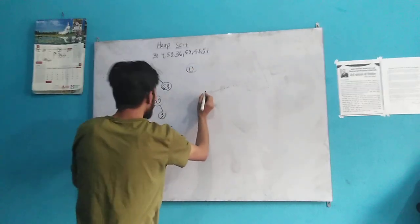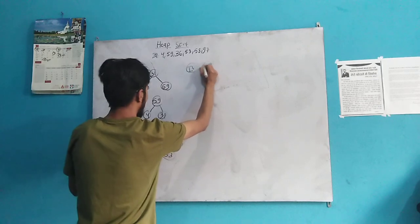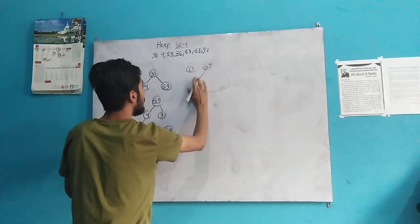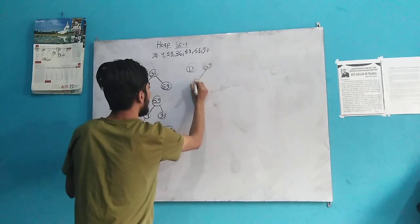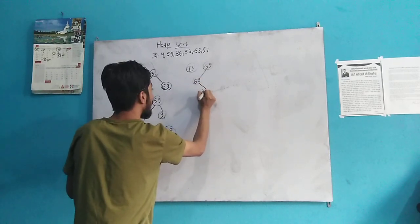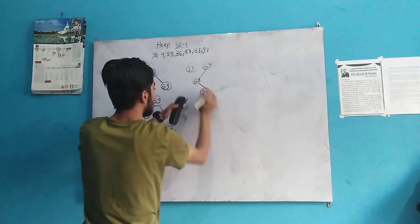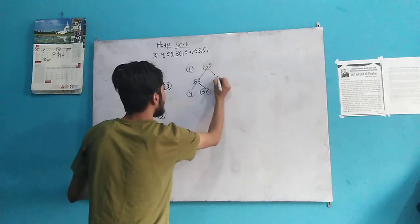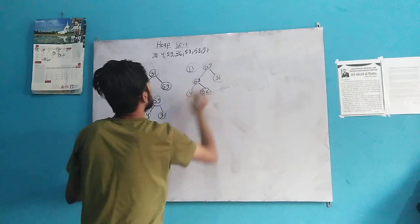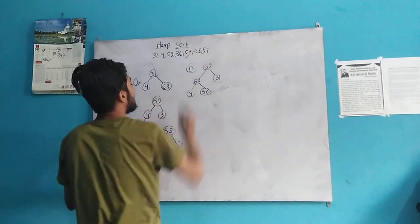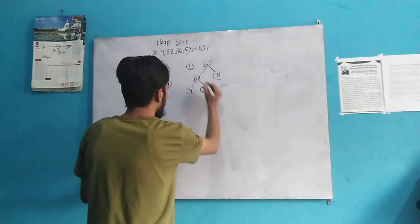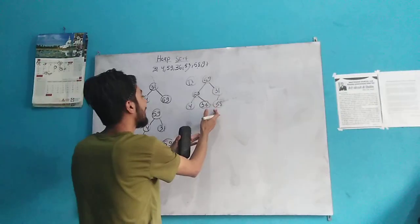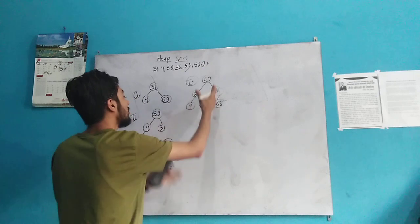Okay, we swap it again. 59, here is 53, here is 36, we swap 53 and 36. Here is 44 and here is 31. We have already inserted 53. Now our turn is to insert 58. Here is 51, so we again need to swap it.